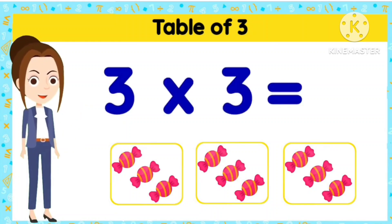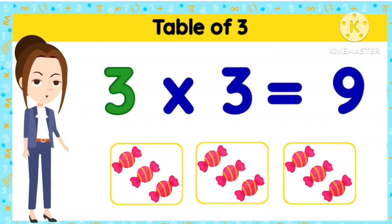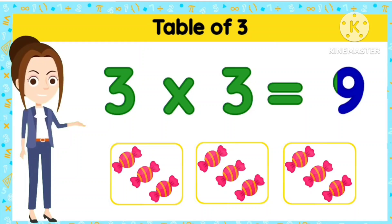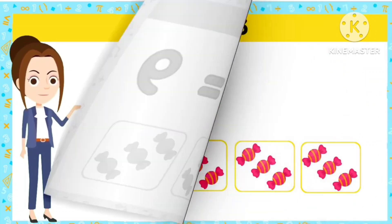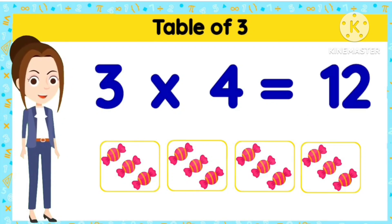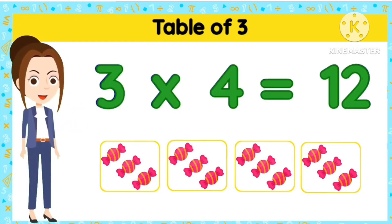3 3s are 9. 3 3s are 9. 3 4s are 12. 3 4s are 12.